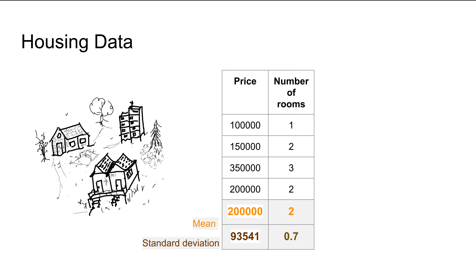Let's look at an example using housing data. On the right hand side we have price and number of rooms. The price is considerably larger in magnitude than the number of rooms. The mean for price is 200,000 whereas the mean for rooms is just 2. This can create problems when working with machine learning estimators that rely on calculating Euclidean distances. Standardization brings them to the same order of magnitude by subtracting the mean and dividing by the standard deviation of each feature.